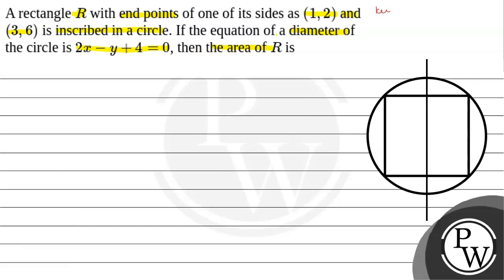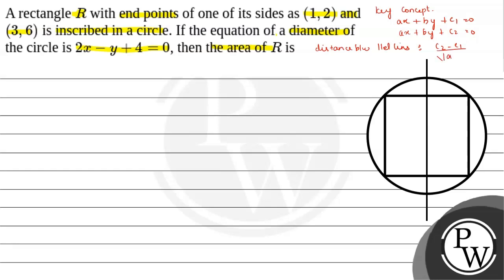The key concept of this question is: if there are two parallel lines ax plus by plus c1 equals to 0 and ax plus by plus c2 equals to 0, the distance between the parallel lines is given by the formula |c2 minus c1| divided by root of a squared plus b squared.